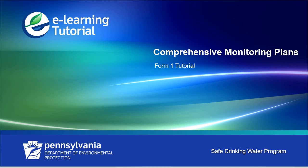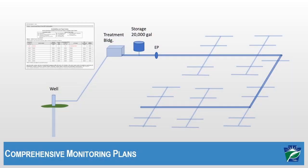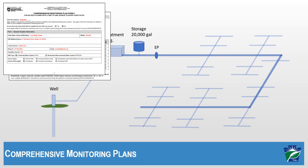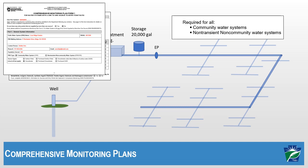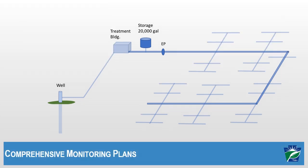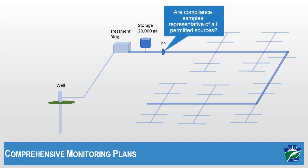In this tutorial, I'm going to show you how to properly complete a comprehensive monitoring plan for a small system. Comprehensive monitoring plans are required for all community water systems and non-transient non-community water systems. These plans must be submitted to DEP by August 19, 2019. The plans are intended to ensure that systems are collecting compliance samples that are representative of each permitted water source.